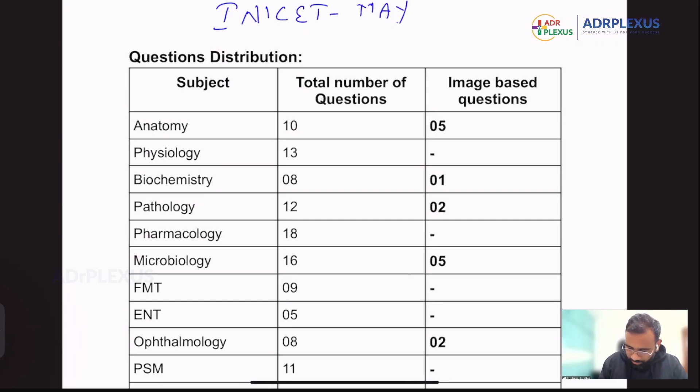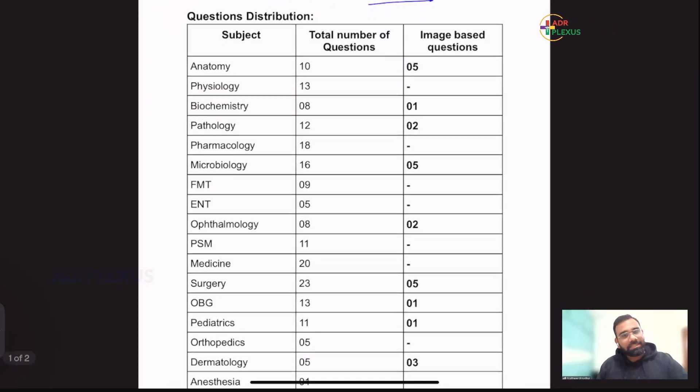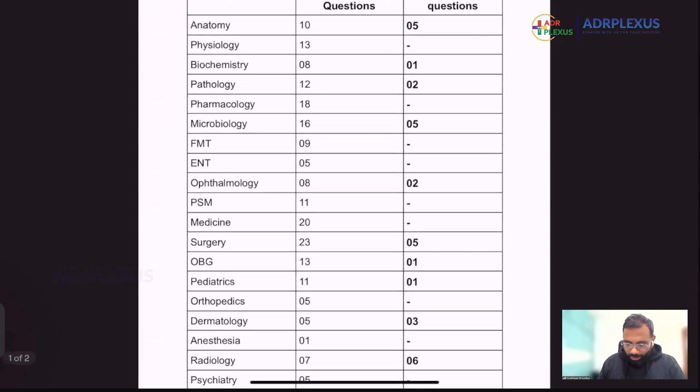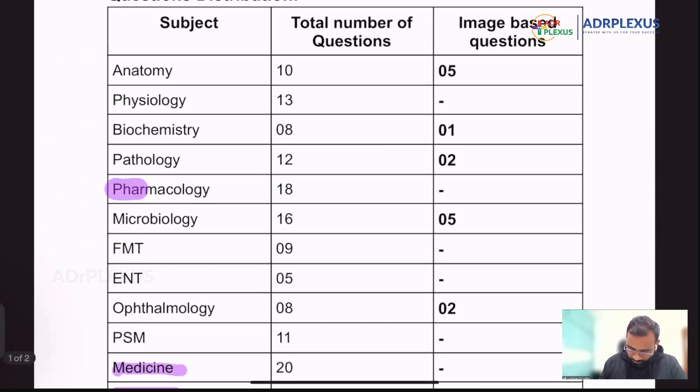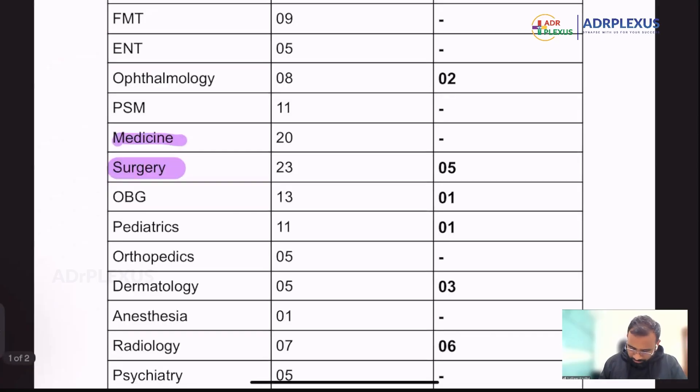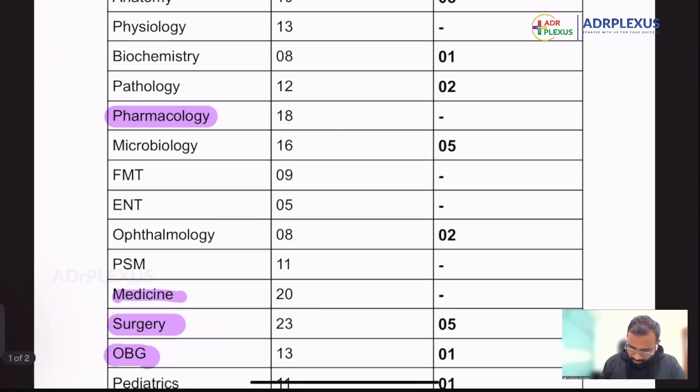So INICT May 2025 paper analysis. So now let's see here. As already we discussed in the class, like INICT or NEET, whatever it may be, the hardcore topics always be medicine, surgery, pharma, OBG, and patho. This is what we always tell. These are the five pillars in both INICT and NEET-PG.